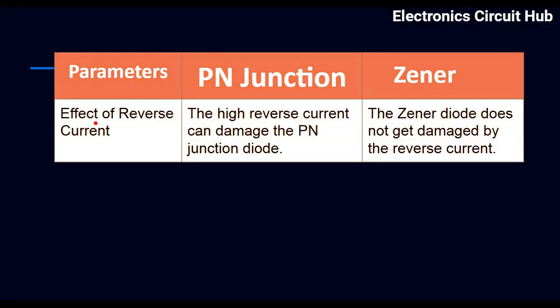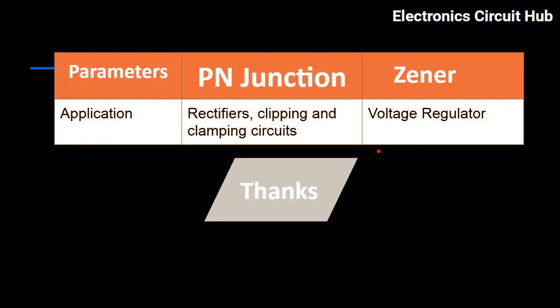Regarding the effect of reverse current: a high reverse current can damage the PN junction diode. The Zener diode, however, does not get damaged by reverse current.